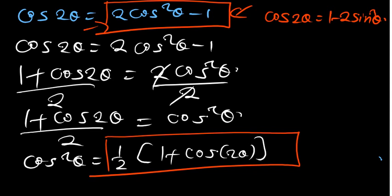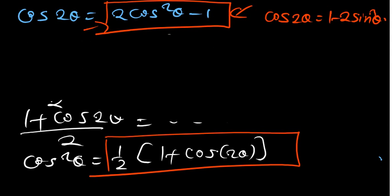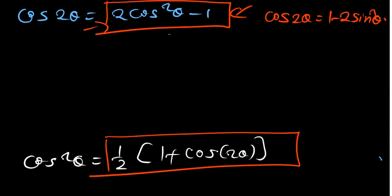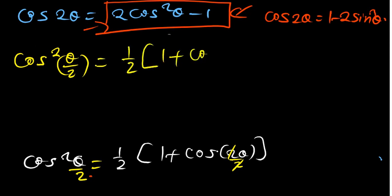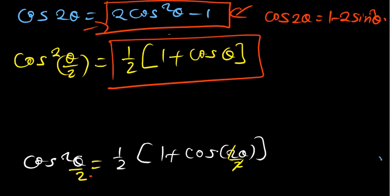From this identity, we can derive a half-angle formula. Where there is theta, I divide it by 2. So cos squared of (theta over 2) equals one-half times (1 plus cos theta). This is another identity you have to know — wherever you see cos squared theta over 2, you can replace it with one-half times (1 plus cos theta).